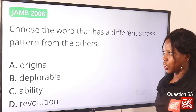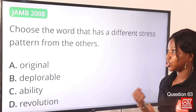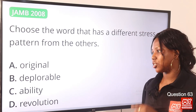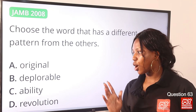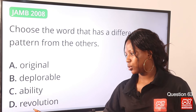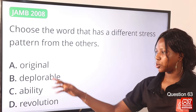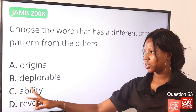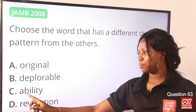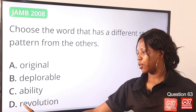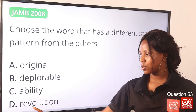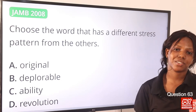Question 63. Choose the word that has a different stress pattern from the others. Option A: original. Option B: deplorable. Option C: ability. Option D: revolution. Options A, B, and C are stressed on the second syllable — original, deplorable, ability. But for option D, it is stressed on the third syllable — revolution. So option D is the correct answer.